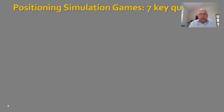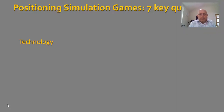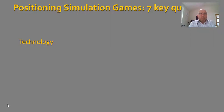If you are looking at specific games, there are another seven questions that help you position a game at a high level so you can see where it fits. The first question is technology — and to be clear, you don't need technology for games. Some are computer-based, but there are excellent board games for game-based learning. If it is a computer game, does it run on a desktop, the web, or on mobile? Remembering the importance of mobile learning from the Gartner Hype Cycle, you need to look at the technology involved.